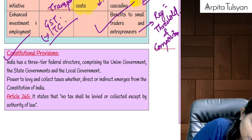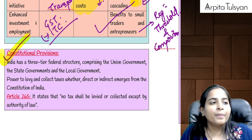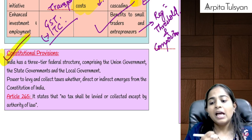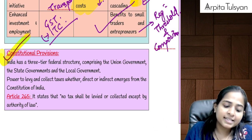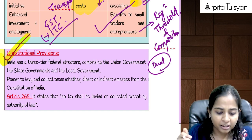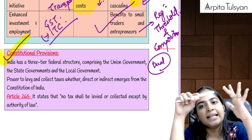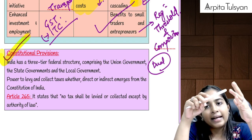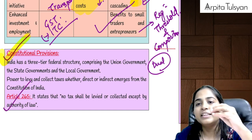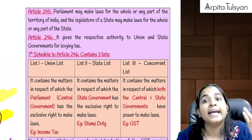Moving to constitutional provisions — before bringing GST, some constitutional amendments were needed. Earlier, powers were with the respective governments. They wanted to give dual powers, but there was no provision in the constitution available for that. India works in a three-tier structure: central government, state government, and local authority. Each government has been given their own respective powers to levy taxes. Article 265 says that without power, no taxes can be levied — if there is no authority in the constitution, you cannot levy any tax.